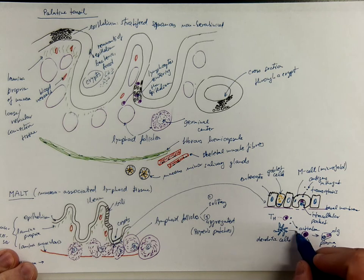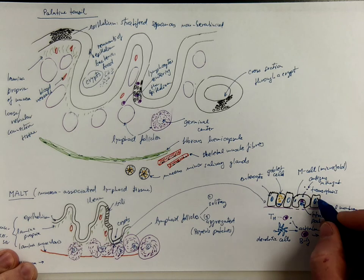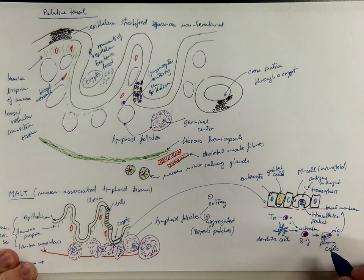So they activate B lymphocytes. And the immunoglobulins are released on the surface of the mucosa.